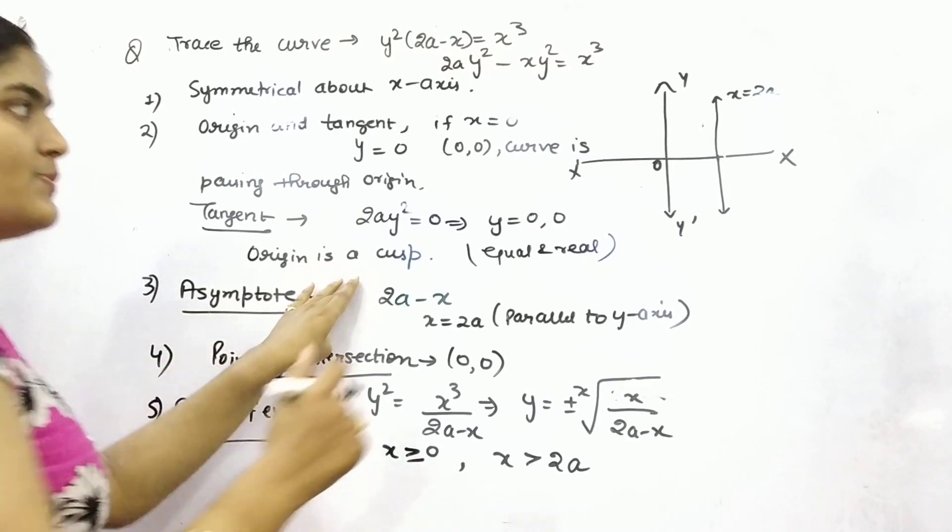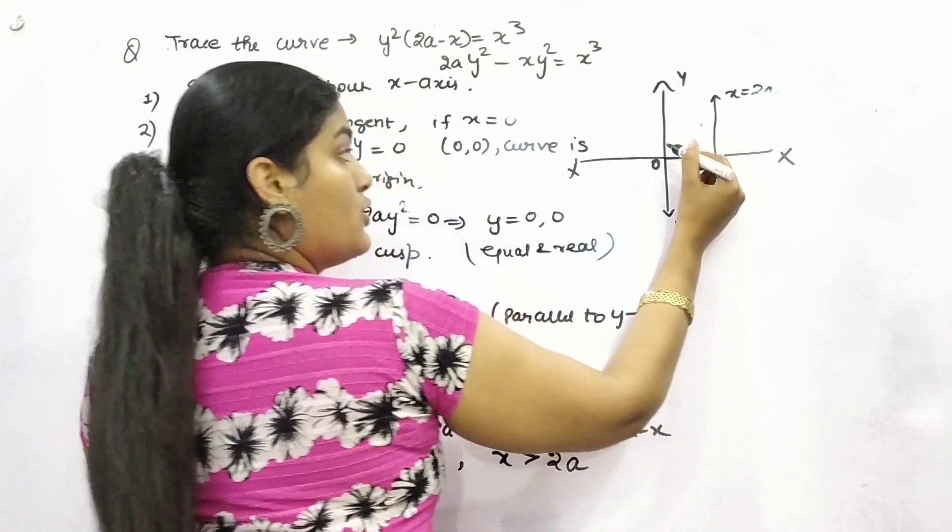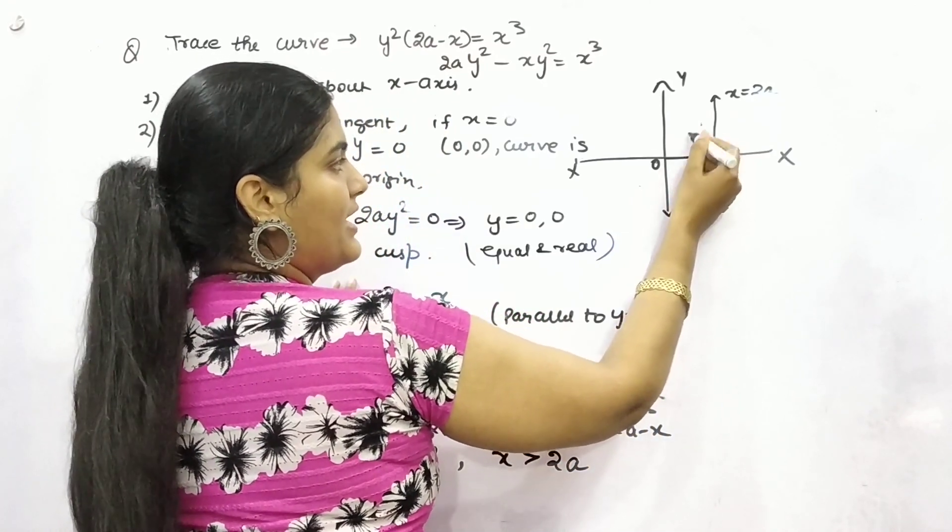So let's say this is your x = 2a. Now I'm going to change it. Your origin is a cusp. Your origin is a cusp.